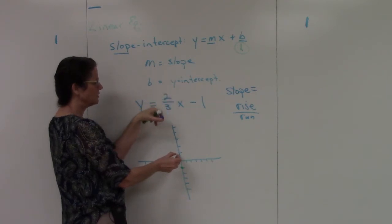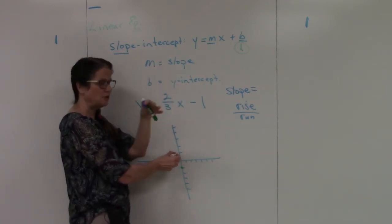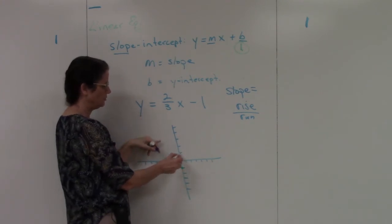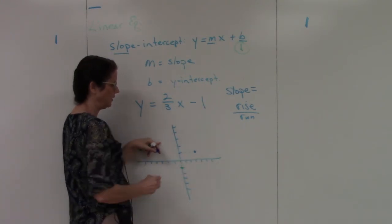So since this is a positive slope, I'm going to run in the positive direction. So I start here. Negative 1 is my y-intercept. I rise 2, and then I run 3. 1, 2, 3. And I put a point.